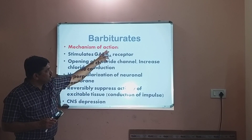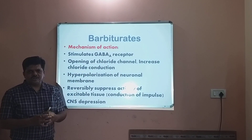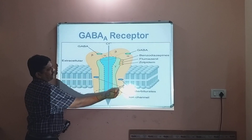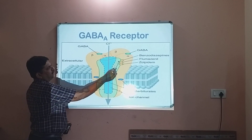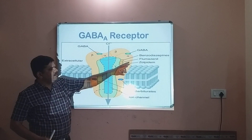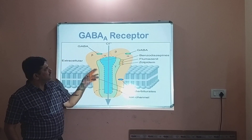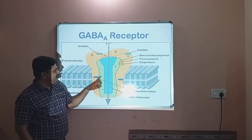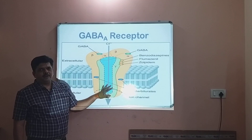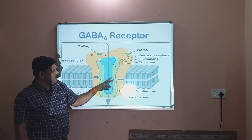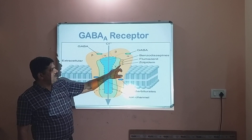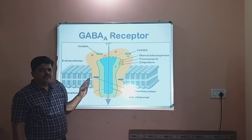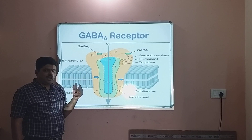Now let us look at the structure of the GABA-A receptor. This is the structure of the GABA receptor embedded in the neuronal cell membrane. These are the sites where drugs can bind: there is a benzodiazepine binding site, a zolpidem binding site, a GABA binding site, and a barbiturate binding site. All these drugs bind at different sites on the same receptor and potentiate the action of GABA.